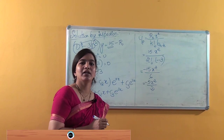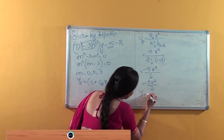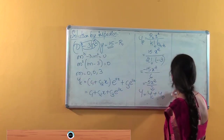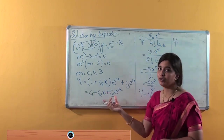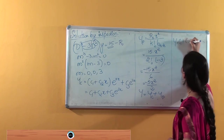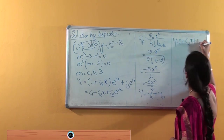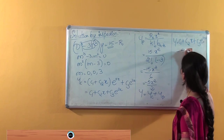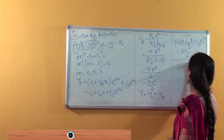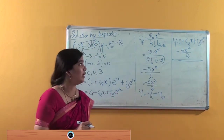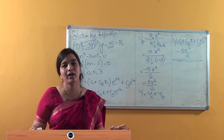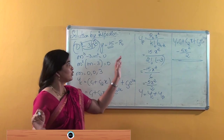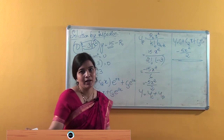Now we write the general solution: y = yc + yp = c1 + c2·x + c3·e^(3x) - 5x²/2. This is the general solution of (D³ - 3D²)y = 50, obtained by the inspection method.